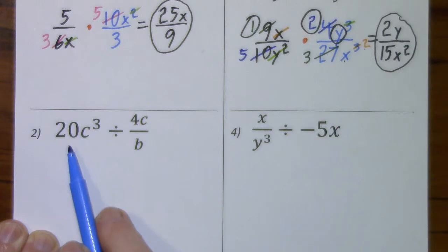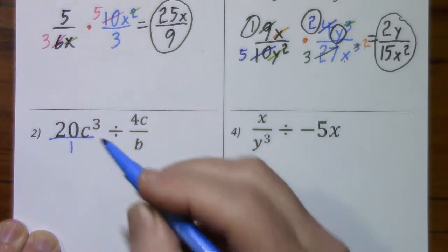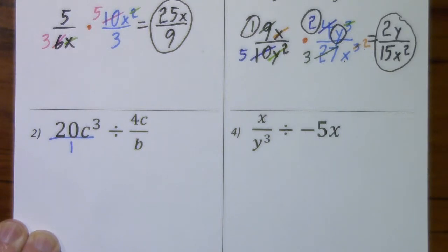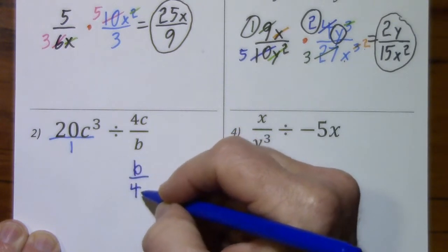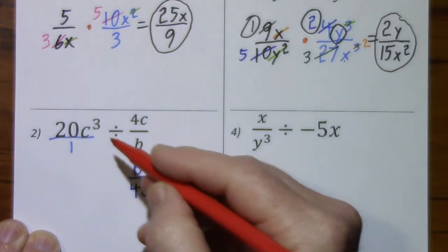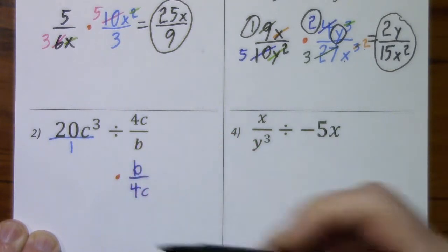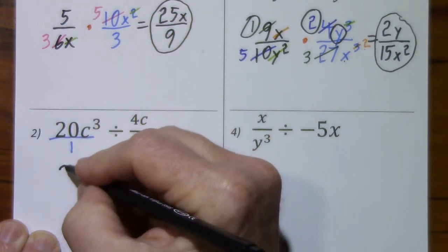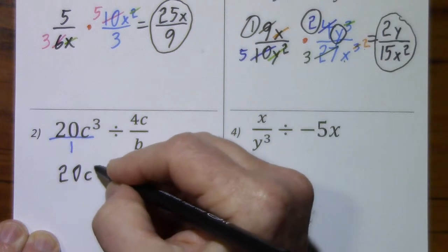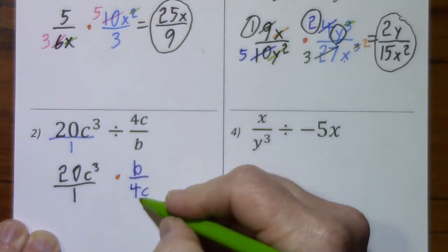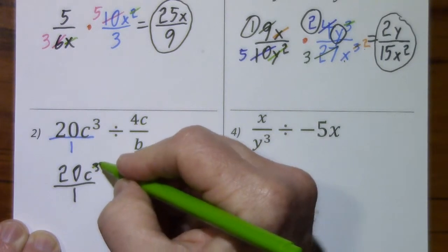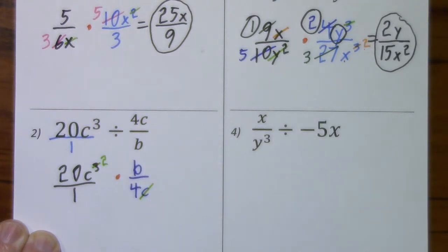Now here we don't have all fractions. We'll make this a fraction by putting it over 1. We take the reciprocal of the divisor. Change division to multiplication, and bring down what's left — so this is 20c to the third over 1. We'll be able to reduce. So this is c to the first; subtract 1, leaves us with c to the second. Notice with b, there's no way to cancel it, so this variable is just going to come along for the ride.